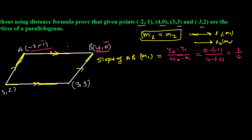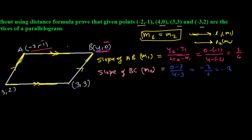Now let's find the slope of BC — call this m2. Difference of y-coordinates over difference of x-coordinates: y2 - y1 = 0 - 3 = -3, and x2 - x1 = 4 - 3 = 1. So slope of BC, m2 = -3/1 = -3.